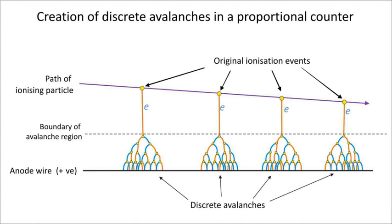The proportional counter is a type of gaseous ionization detector device used to measure particles of ionizing radiation. The key feature is its ability to measure the energy of incident radiation by producing a detector output pulse that is proportional to the radiation energy absorbed by the detector due to an ionizing event, hence the detector's name.